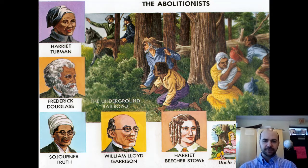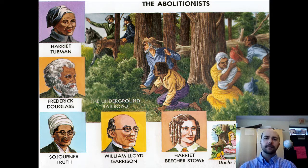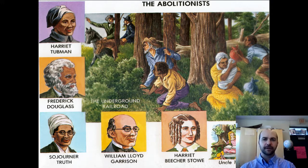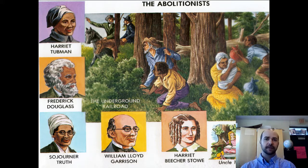Here are some images of the abolitionists we talked about — Harriet Tubman, Frederick Douglass, Sojourner Truth, William Lloyd Garrison, and Harriet Beecher Stowe who wrote Uncle Tom's Cabin. There's also a drawing of people on the Underground Railroad. Notice there are no trains and no tracks — it was just footpaths from the south to the north, or different houses where people could stop as they walked, hid in wagons, and did whatever they could to get out of the south.